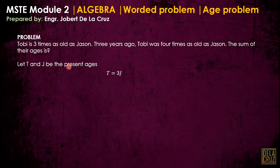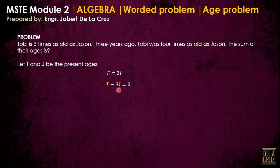From the statement 'Toby is three times as old as JSON,' that gives us T equals three times J. Then, three years ago, the age of Toby is T. From this equation, I rearrange — I just transpose 3J to the other side — so it becomes that form. And this is my equation one.